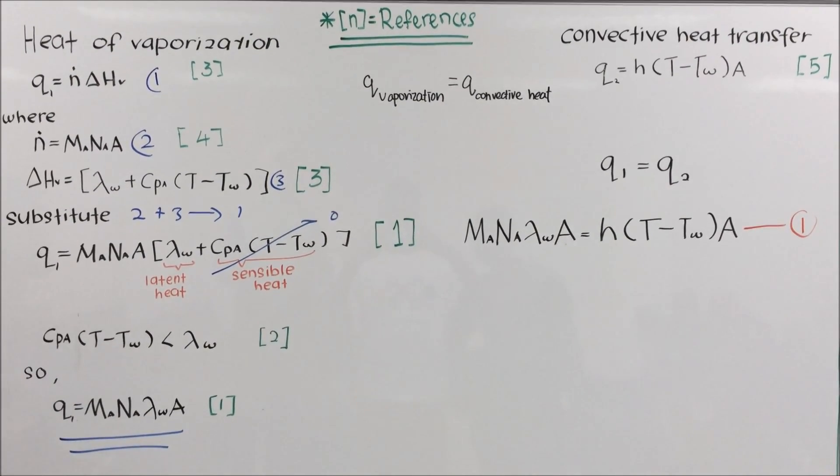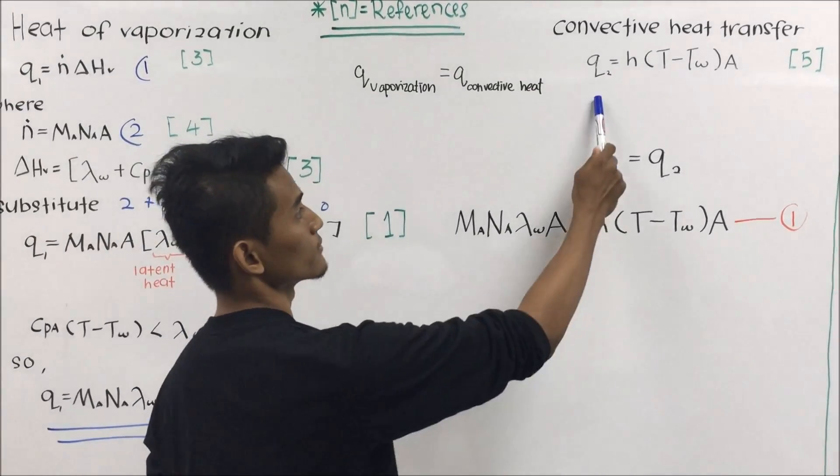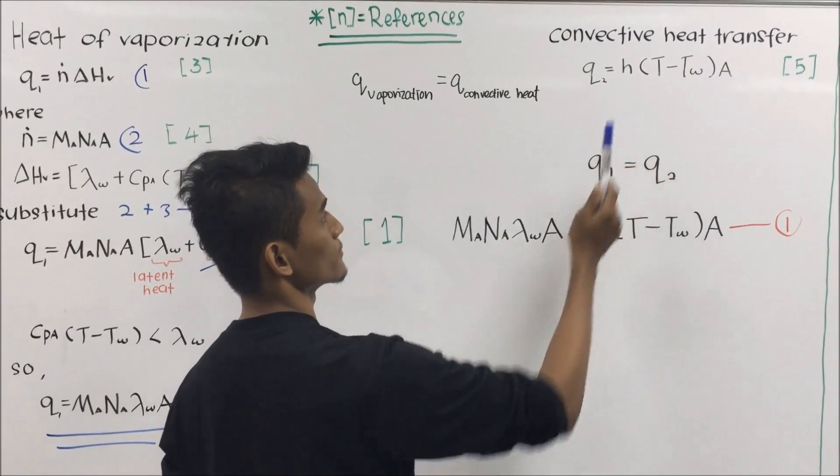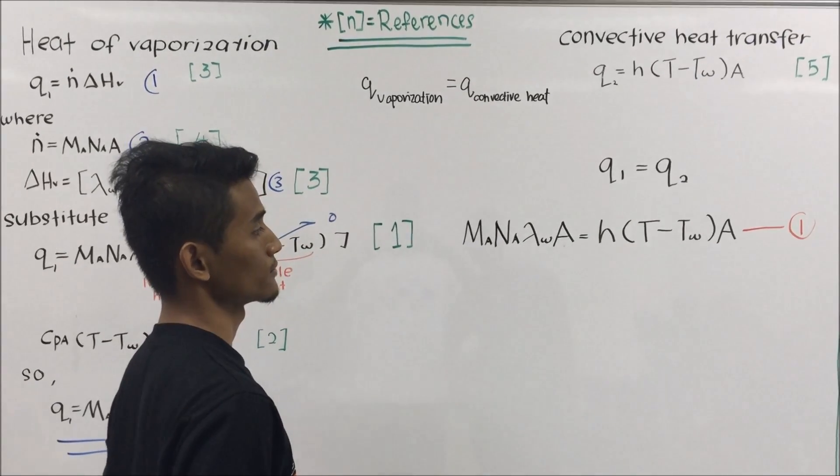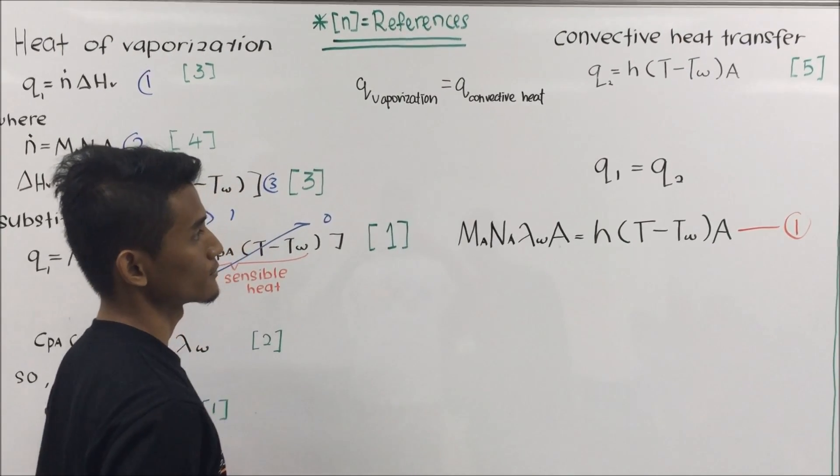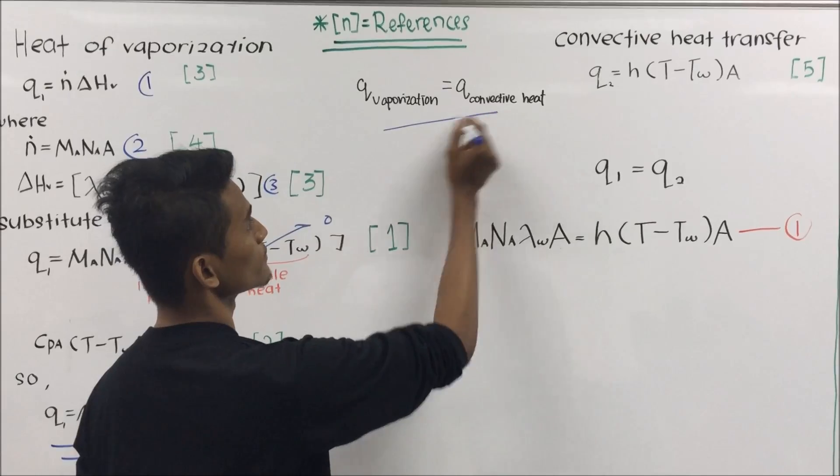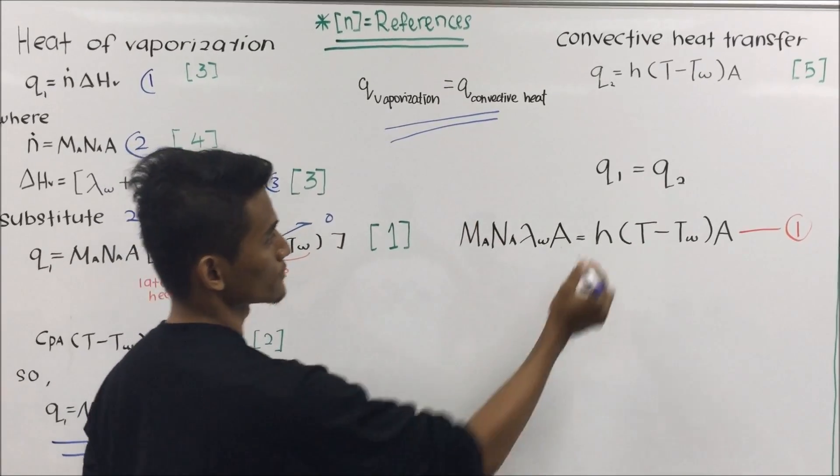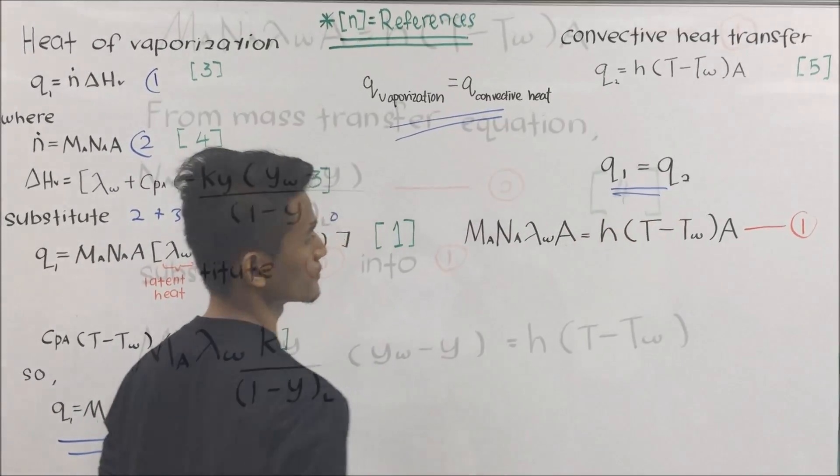For the convective heat transfer, Q is equal to h times T minus Tw times A. As mentioned before, Q vaporization is equal to Q convective heat, so Q1 will equal to Q2. Then we will get the relation.